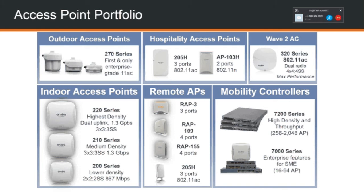Wave 2 is the next version of AC and allows for more capacity and more throughput. One key feature is multi-user MIMO, which allows the access point radio to talk to multiple clients at the same exact time. Before this, the radio had to share time with multiple clients — talking one at a time, very fast, but one at a time. Multi-user MIMO comes in to handle higher-density users more than anything else.